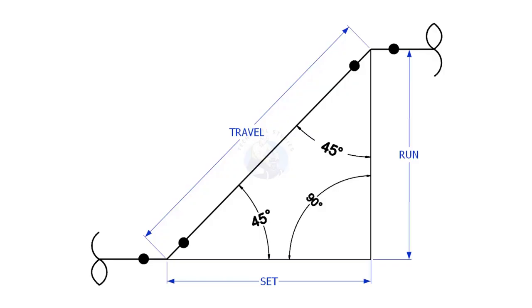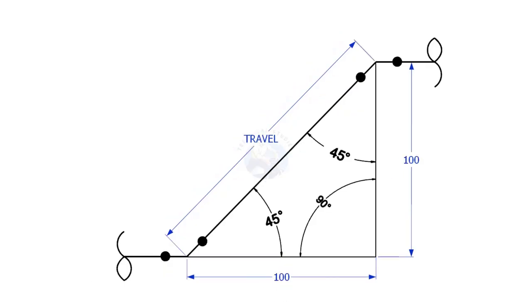Let's start by examining the 45 degree offset. If the including angle is 45 degrees, then the set and the run shall be equal. In this offset, suppose the set is 100, then the run also shall be 100.